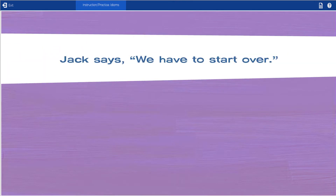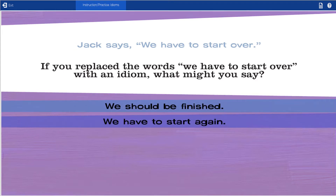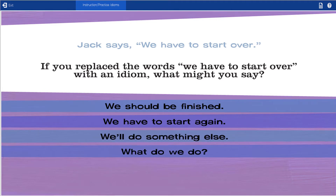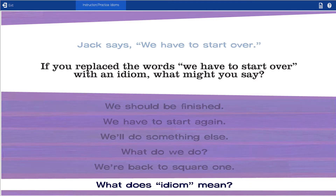Picture this. Jack says, 'We have to start over.' If you replaced the words 'we have to start over' with an idiom, what might you say? Options include: 'We should be finished,' 'We have to start again,' 'We'll do something else,' or 'We're back to square one.' If your student is not familiar with idioms, they can choose the answer 'What does idiom mean?' Let me have my friend Rita explain — let's flip on the old time word show for a little bit of help.